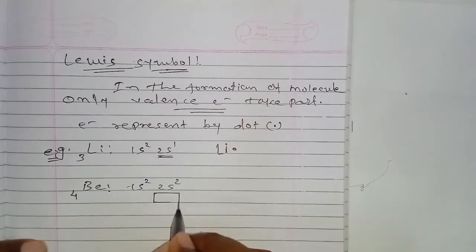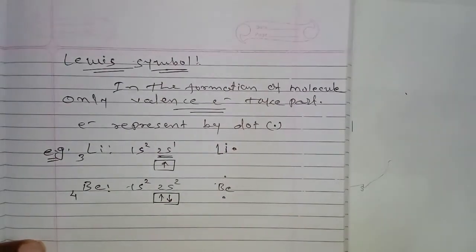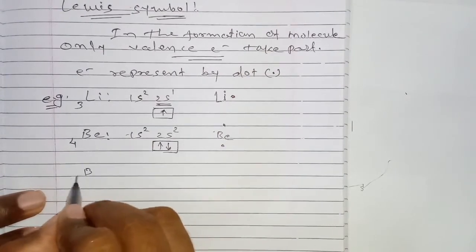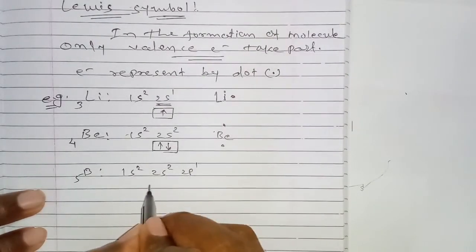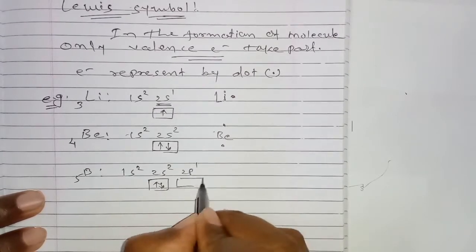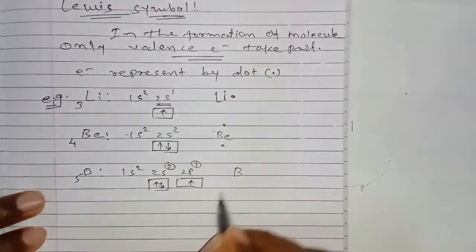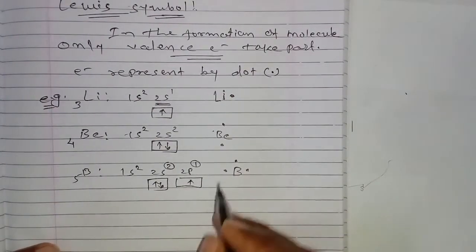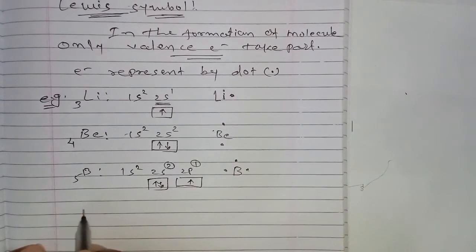Beryllium has atomic number 4 with configuration 1s² 2s², giving two electrons in the outermost shell — represented by two dots. Boron has configuration 1s² 2s² 2p¹, giving three electrons in the outermost shell — represented by three dots. Carbon (atomic number 6, configuration 1s² 2s² 2p²) has four electrons in the outermost shell.